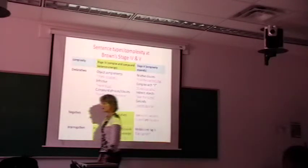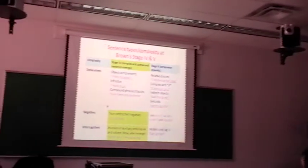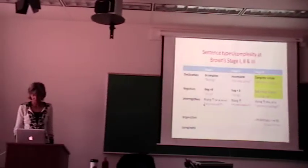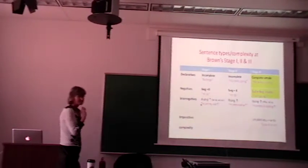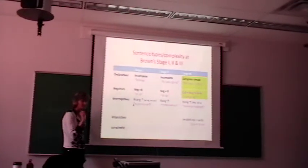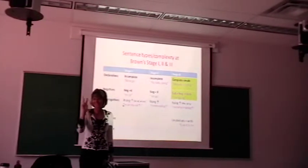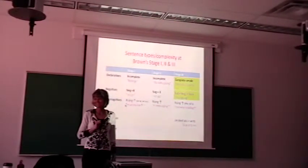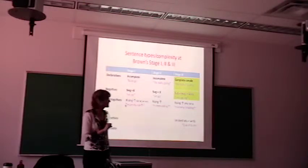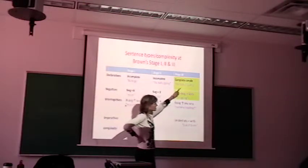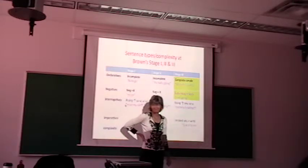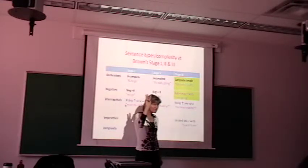If we go back, what are the big things to look for in declaratives to assign stages? What are the two big things you're going to look for? What happens at stage 3? Complete simple sentences. Complete simple sentences because they're starting to use the auxiliaries and complex. So stage 3 is a big one. Circle that.